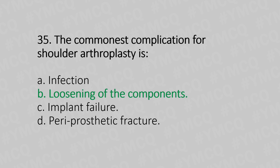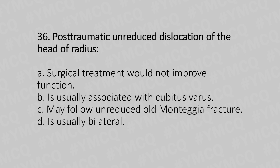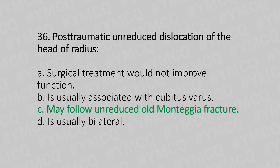Now let's move to question number 36. Post-traumatic unreduced dislocation of the head of the radius. Option A, surgical treatment would not improve the function. Option B, is usually associated with cubitus varus. Option C, may follow unreduced Monteggia fracture. Option D, is usually bilateral. And the answer is Option C, may follow unreduced Monteggia fracture.